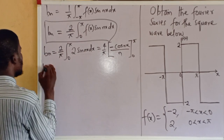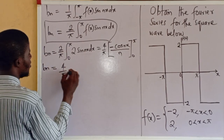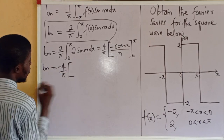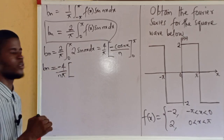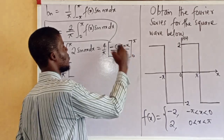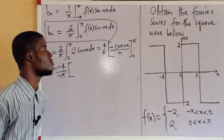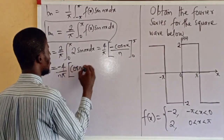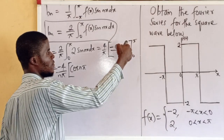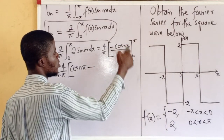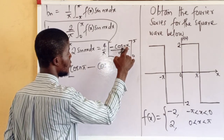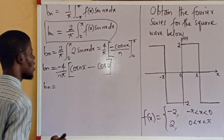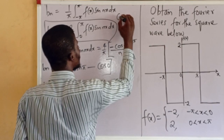So b sub n is 4 over pi times the result. The n and the minus can come out, giving minus 4 over n pi times cosine nx evaluated from 0 to pi. Taking the limits: pi enters for x giving cos(nπ), then 0 enters for x giving cos(0). Cos(0) equals 1.